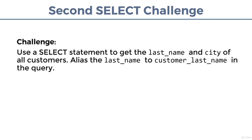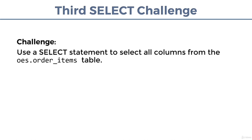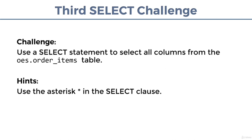For the second challenge, use a SELECT statement to get the last name and city of all customers, and alias the last name column to customer_last_name. The hints: query the table oes.customers and use the AS keyword to alias the column. For the third challenge, use a SELECT statement to select all columns from the oes.order_items table — the hint is to use the asterisk in the SELECT clause. In the solution, we'll discuss the pros and cons of this approach. Give those challenges a go, and in the next video we'll go through the solutions.